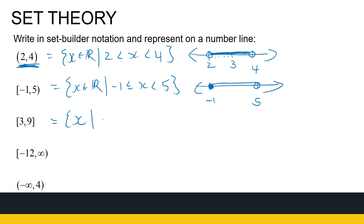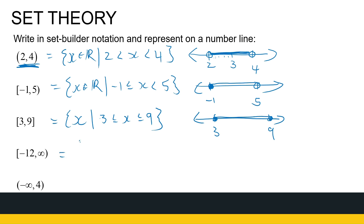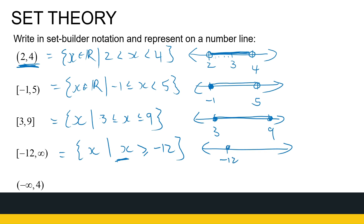For the set of all X where 3 ≤ X ≤ 9, note I didn't write that X is a real number. Because real numbers is the largest set we consider here, if we omit specifying the type, we assume X is real. You must specify if it's a natural number or integer. For [-12, ∞), it's all X where minus 12 ≤ X. Do not write infinity in the set builder notation — it's clumsy. We know X is just greater than or equal to minus 12 and continues forever.